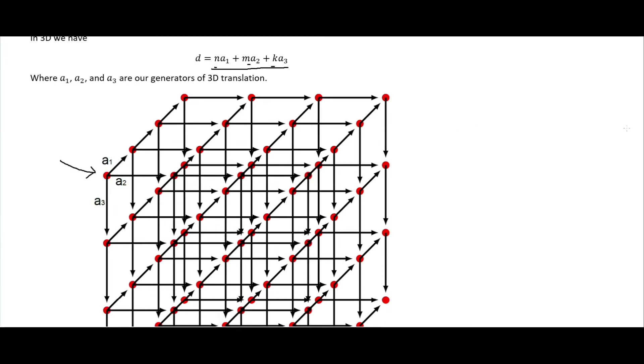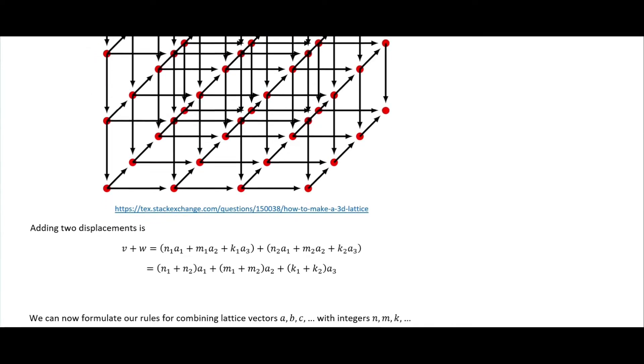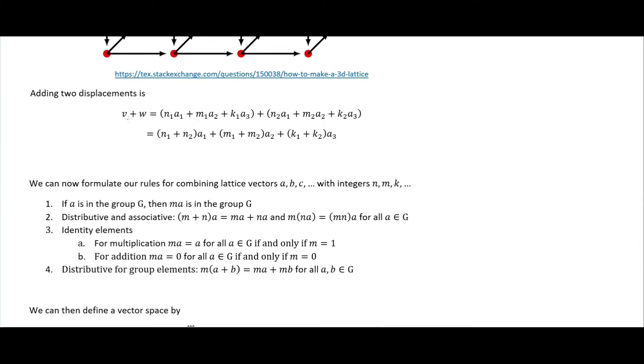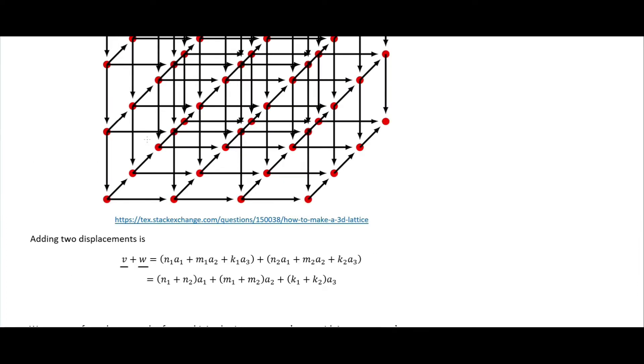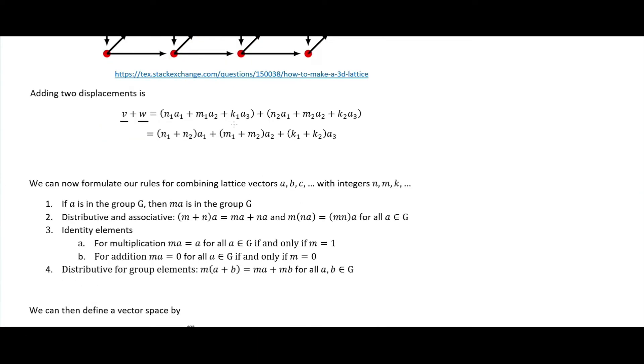You can get to any point in this three-dimensional grid by just going a certain number of a-ones, a certain number of a-twos, and a certain number of a-threes. That is a three-dimensional lattice. When we want to add two displacements, we have our v and w here. Say we wanted to add a displacement to here plus a displacement to something way down here, then we have to add it like this. But then we want to rearrange it so that we're just adding up the components of the a1 here times our a1, our components of the a2 here times the a2, and then the components of the a3 here times the a3. So it's just vector addition.